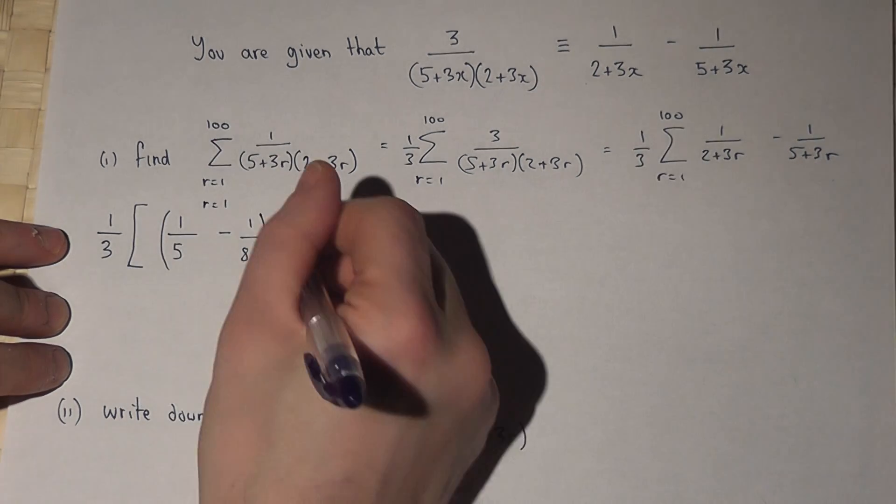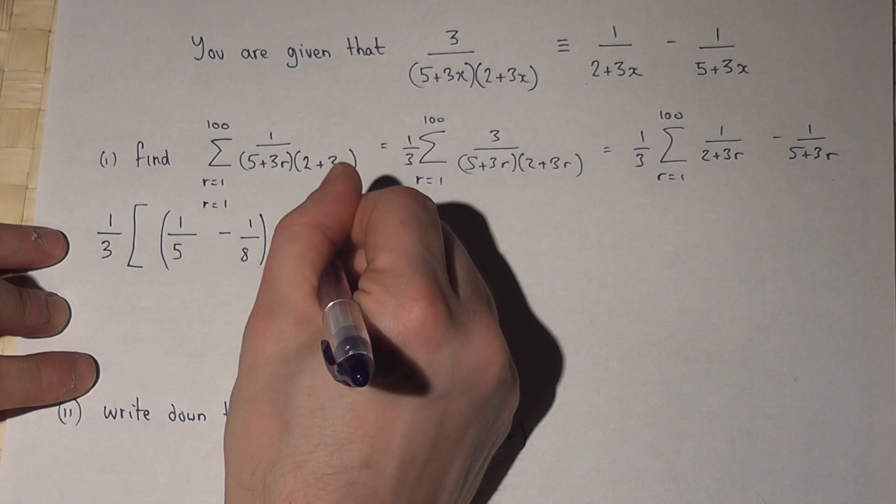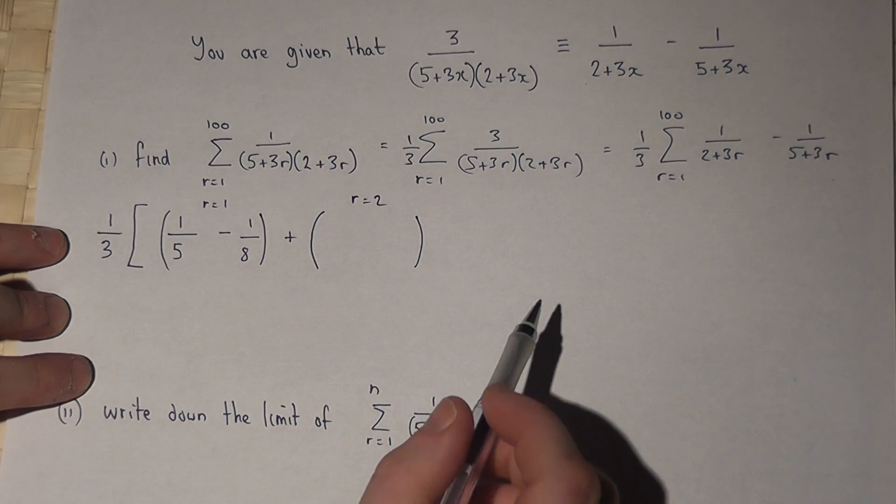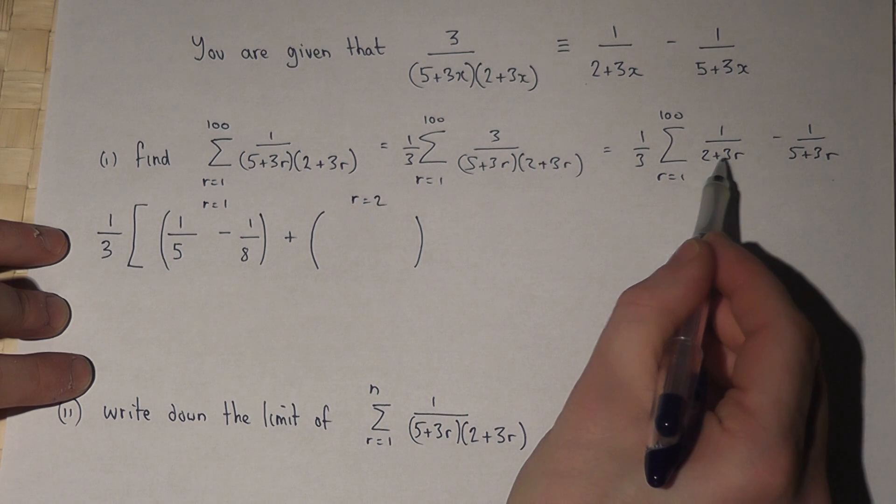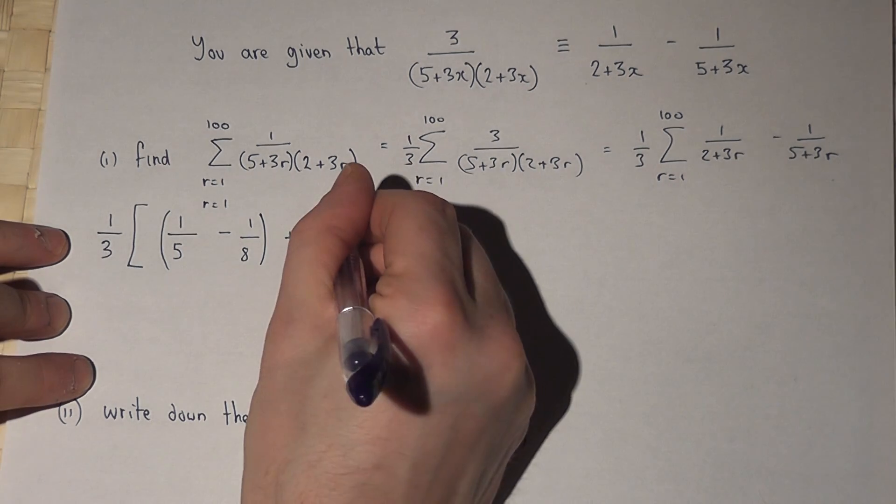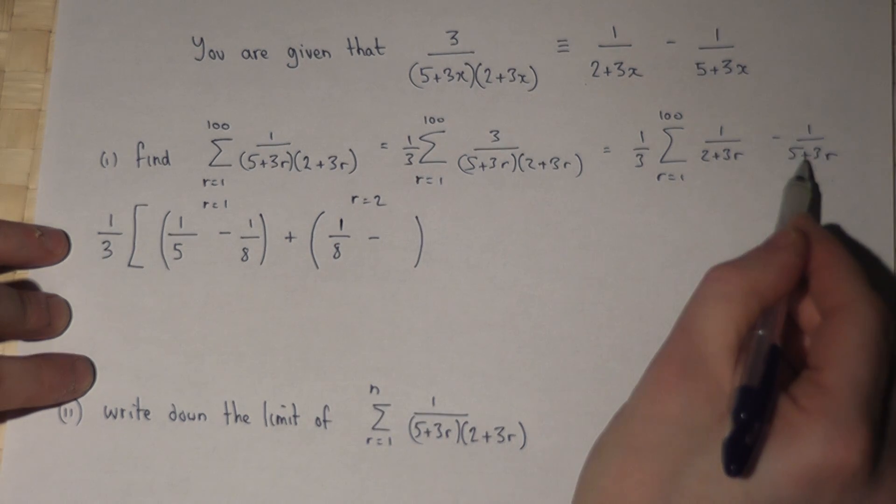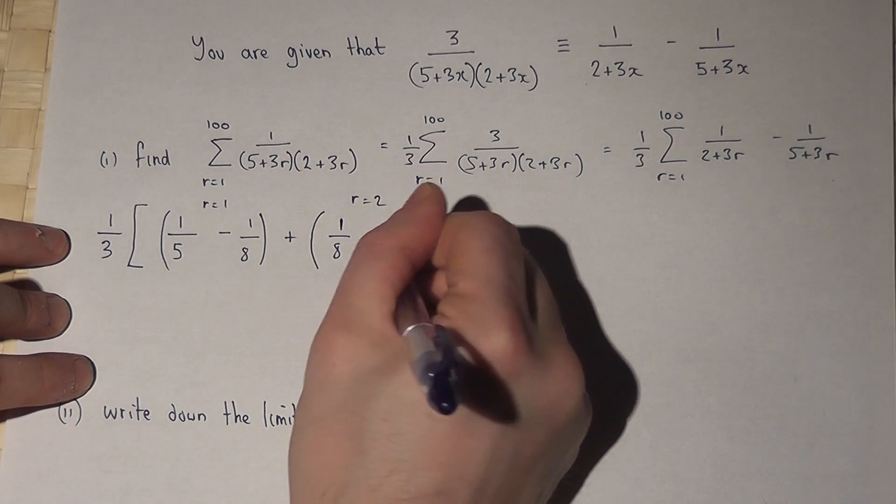The summation then says to work it out next when r is 2. When r is 2, 2 plus 3 times 2 is 8, so we get 1 over 8 take away 1 over 5 plus 3 times 2 is 6, 5 plus 6 is 11, so 1 over 11.